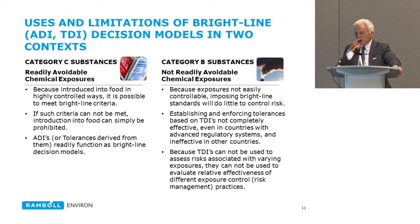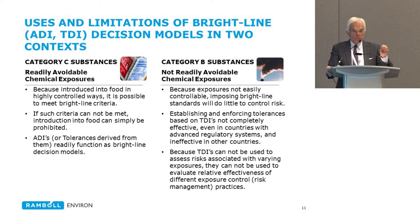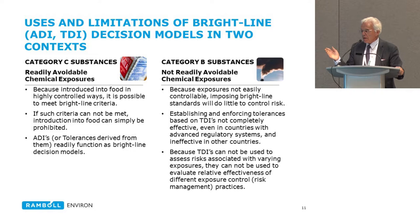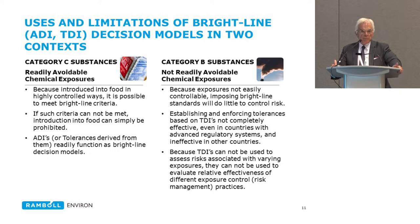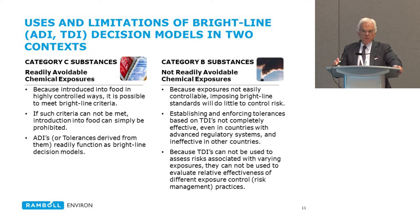For Category C — the intentionally introduced substances — the bright line model is fine. We can use that risk model to decide whether something is safe or unsafe, as long as it's a purely risk-based decision. For Category B — exposures not readily avoidable — we might establish tolerances based on a TDI, and we do this all the time. They're necessary to do a check on what we're doing, but they have limited ability to solve the problems. Even in countries with advanced regulatory systems, simply having a standard and enforcement program doesn't solve the problem. There are other uses of risk assessment that can help us understand better ways to solve it.